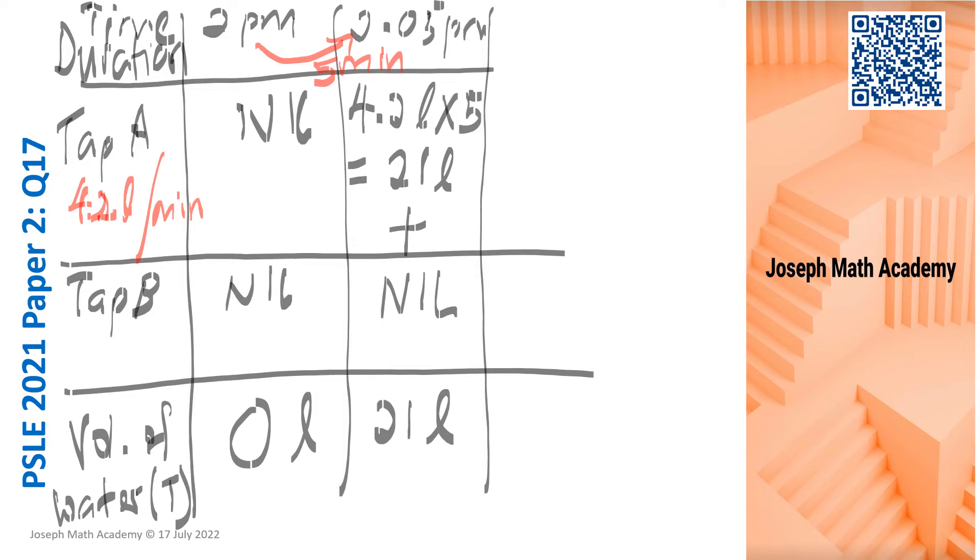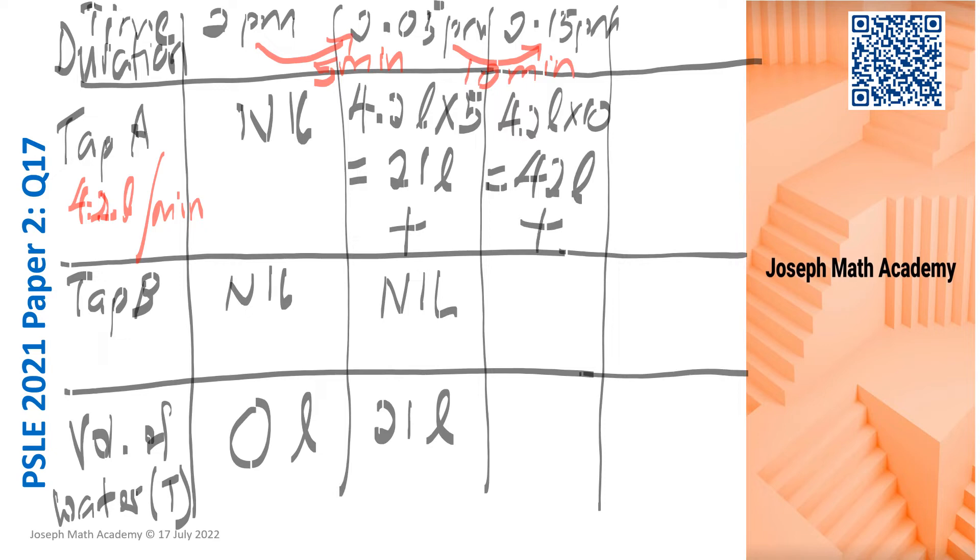Now, what is happening to tab B? Tab B is in action very soon at 2:15. Tab B is at work. So at 2:15, tab B is turned on. So from here to here, it is actually 10 minutes. So let's settle tab A first. 10 minutes means 4.2 liters times 10. That is 42 liters is being added. And what about tab B? We are needed to solve this. So I'm going to leave a very big box there for us to fill in.